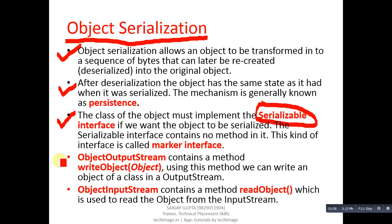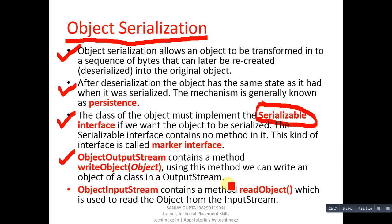ObjectOutputStream is the class you have to use while writing an object into a file. It contains a method writeObject, using which we can write an object of a class into an output stream.